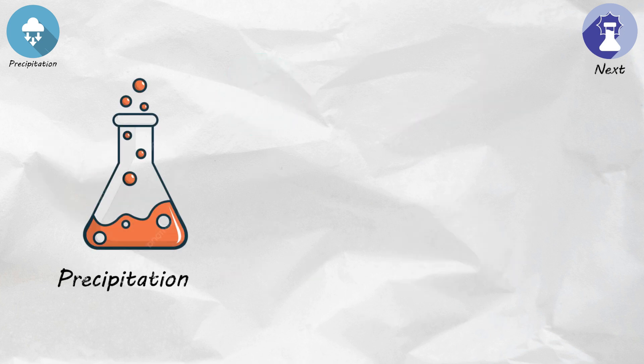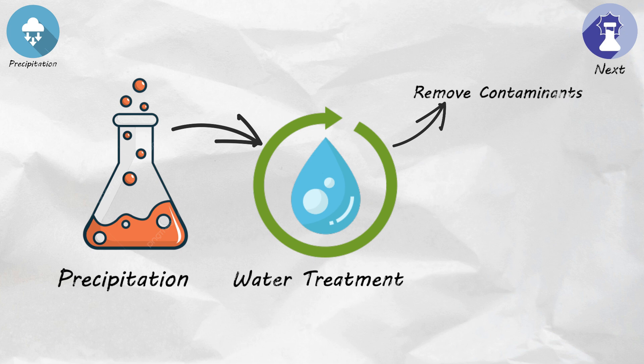Precipitation is also used in water treatment to remove contaminants, and in qualitative analysis to identify the presence of specific ions.